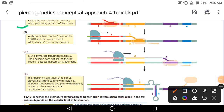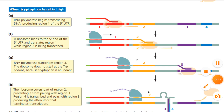When tryptophan level is high, RNA polymerase begins to transcribe the DNA, producing region 1 of the five-prime UTR. Ribosome, five-prime UTR के five-prime end से bind होता है और region 1 का translation शुरू कर देता है जबकि region 2 transcribe हो रही है।